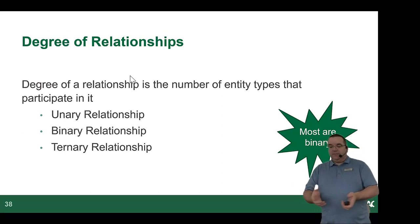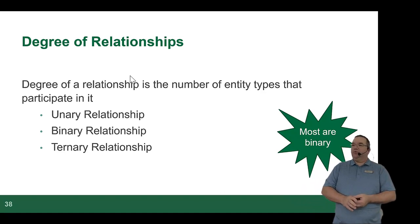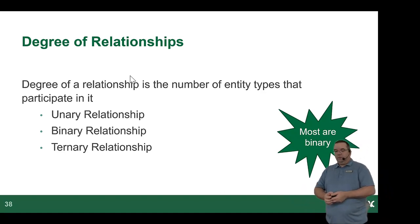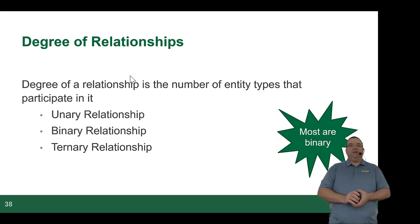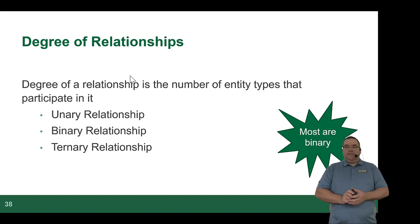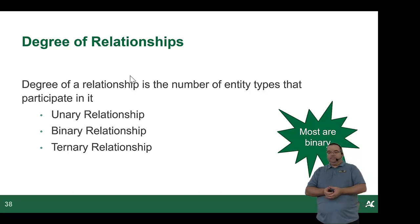At some point, somebody decided they really needed to give the different degrees of relationships names. Instead of just saying first, second, third degree, they decided to call it unary, binary, and ternary. 90% of relationships in a database are binary. Rarely do you see unary or ternary.